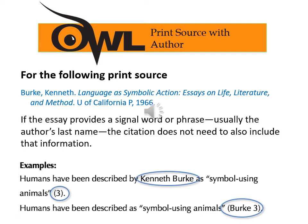If we don't use attribution — we don't set up the quote with Burke's name — we have to include it in the in-text citation: 'Humans have been described as quote symbol-using animals unquote (Burke 3).' I implore you to use attribution — it's better and informs the reader right away, qualifying the expert by saying they're a leading expert in the field of X, Y, and Z. When you quote or paraphrase someone, attribution makes it clear that at that point it's their voice, not yours.